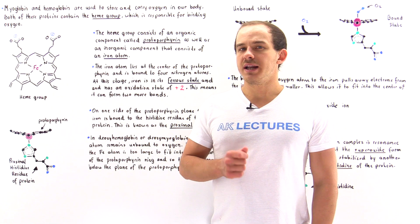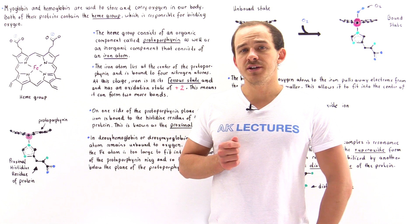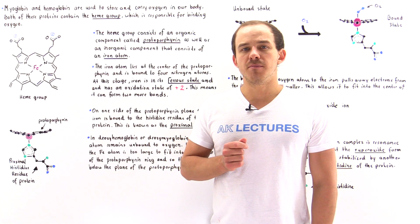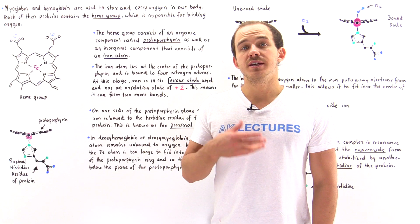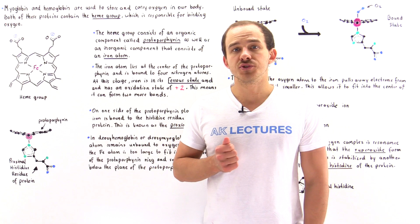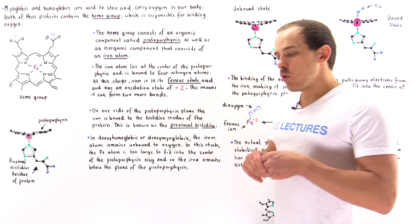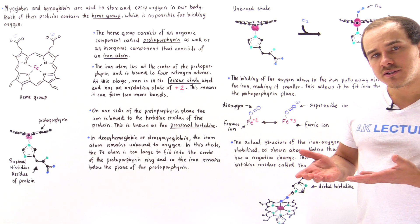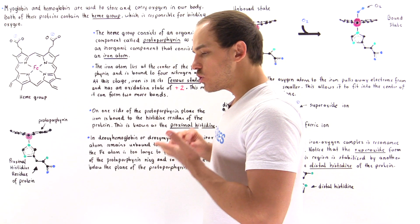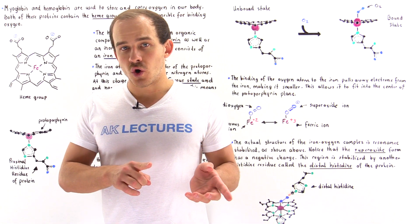Inside the cells of our body, a process we call aerobic cellular respiration uses oxygen to produce ATP molecules, and these ATP molecules are used by our cells as an energy source. Now what exactly delivers the oxygen to the cells of our body? Well, we have two proteins inside our body that play this role.